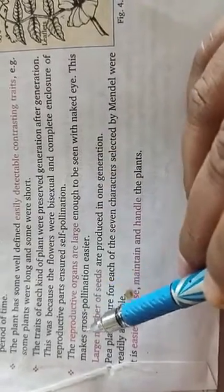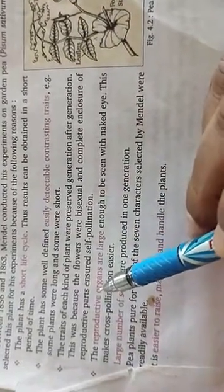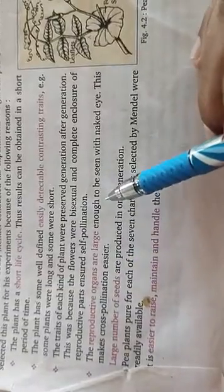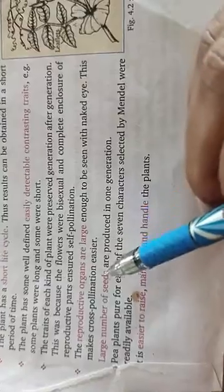The reproductive organs are large. This is effective for self-pollination.